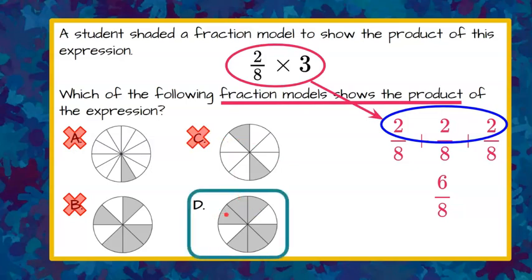But let's check it out. 1, 2, 3, 4, 5, 6. So 6 of the 8 sections in our fraction model are shaded, representing what we came up with as a product. So our answer is D.